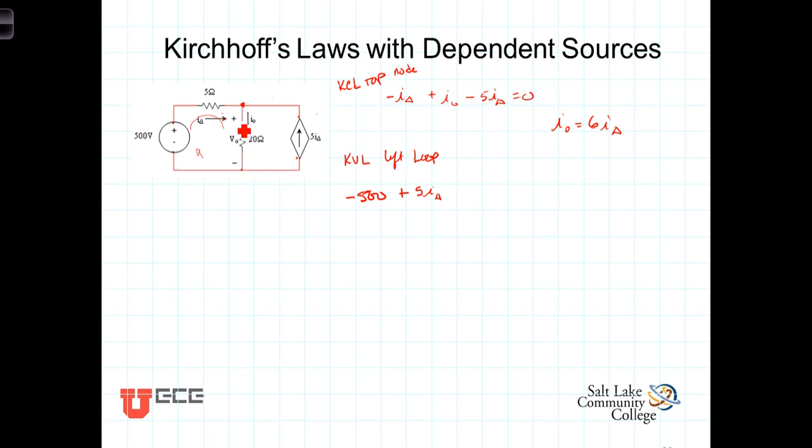Coming down here, we have plus to minus V-out. We know that V-naught is equal to the current here, I-naught, times the 20 ohms. We've already got the variable I-naught, so rather than introducing V-naught, we'll write that V-naught equals 20 times I-naught. Coming back to the equation, plus to minus, that'll be plus 20 I-naught. The sum of those three terms must equal zero.